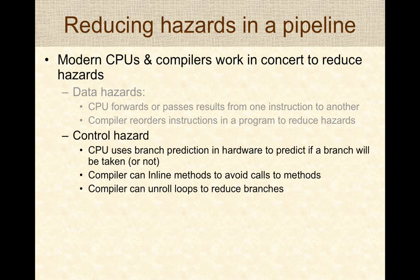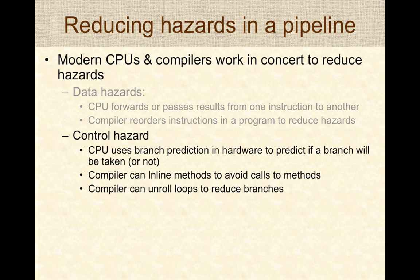Control hazards can be reduced by both hardware and software strategies. Hardware uses branch prediction to predict whether a branch will be taken, based on past behavior, and speculatively executes the predicted instructions. The compiler can help by inlining methods — replicating the method body at the call site to eliminate method calls — especially for short methods like getters. The compiler can also unroll loops by repeating the loop body, reducing the number of branch instructions due to looping.